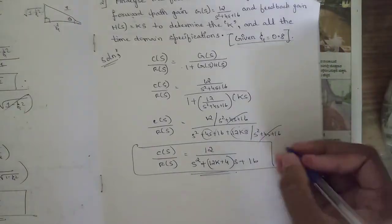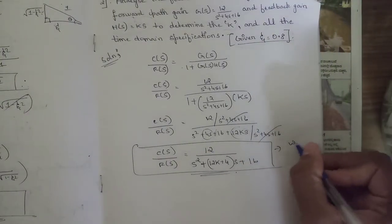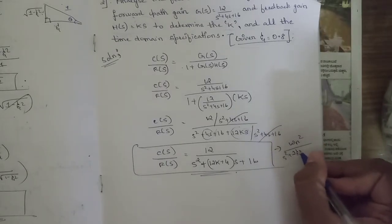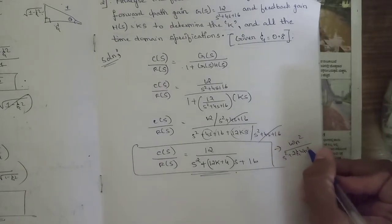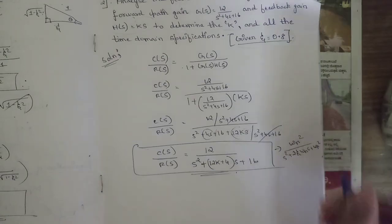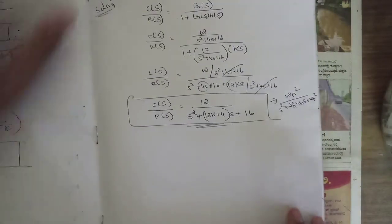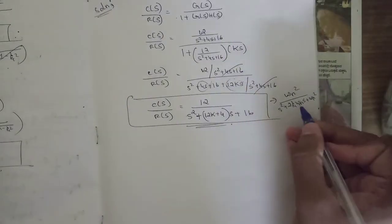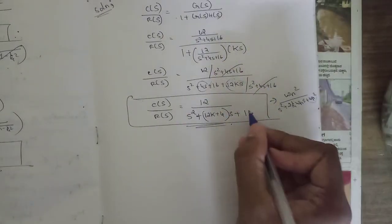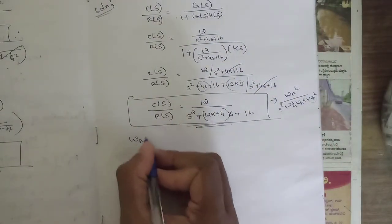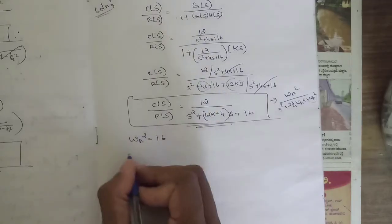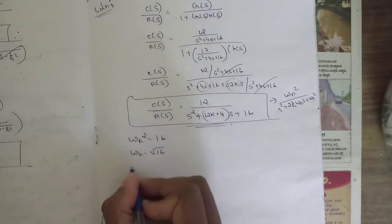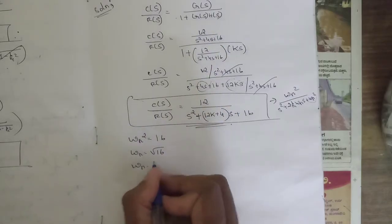Now compare this transfer function with the general standard form: ωn² / (s² + 2ζωn·s + ωn²). Looking at the denominator, ωn² = 16, so ωn = √16 = 4 radians per second.